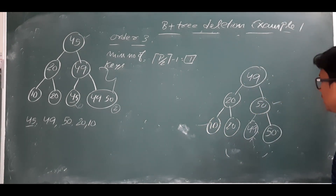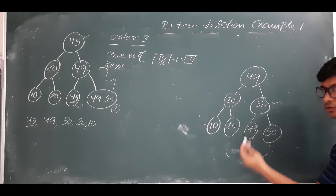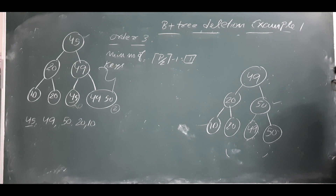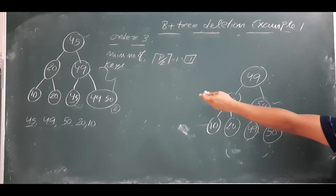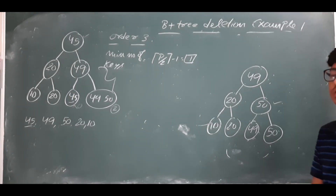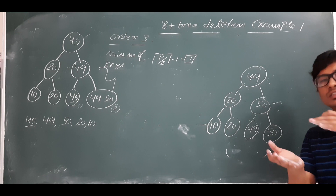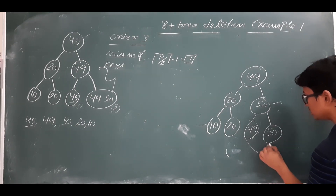Deleting 49 from the leaf causes an underflow since it drops to zero elements. We check for borrowing: it has no left sibling, and the right sibling (50) already has the minimum number of elements, so it cannot lend. We therefore proceed to merge: we merge 49 and 50, and the corresponding entry 50 must be deleted from the parent node.